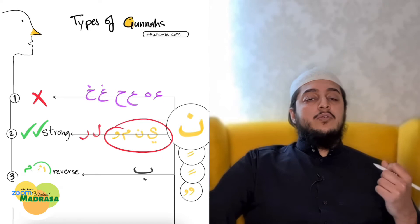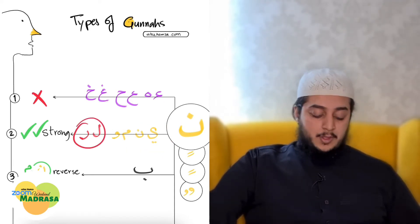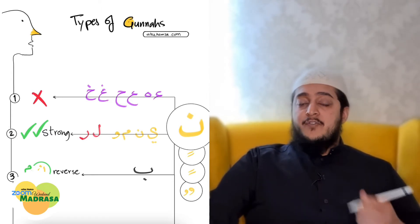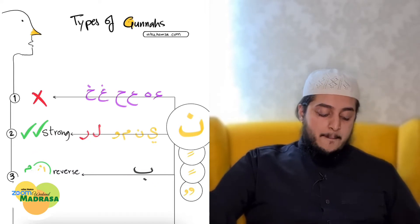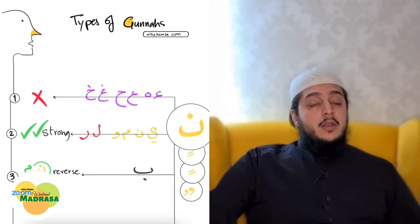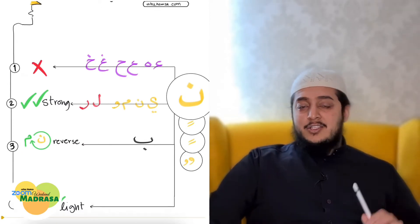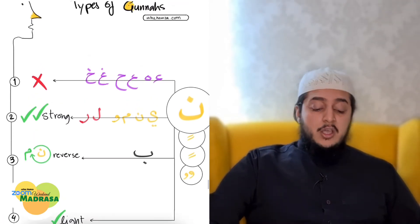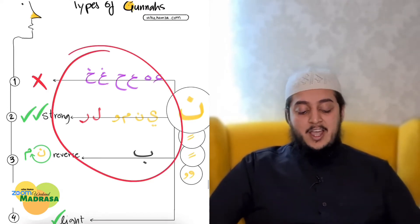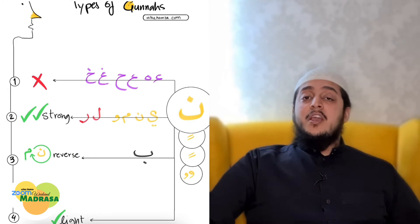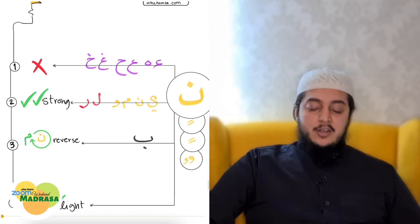After noon or tanween, we still merge but we don't do ghunna when we see laam and raa. What happens when we see ba after noon and tanween? We change the ghunna into a different type of ghunna (iqlaab). Now with all the rest of the letters - this is really easy - the fourth type of ghunna: when you see all the rest of the letters apart from these letters I have shown you earlier, if they come after noon and tanween, what we do is a light ghunna.